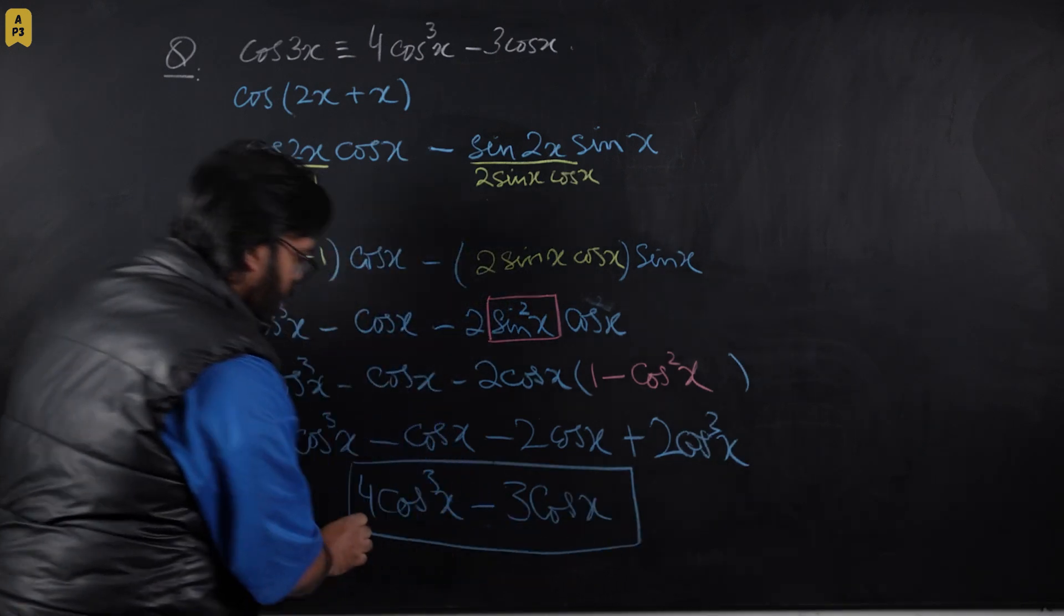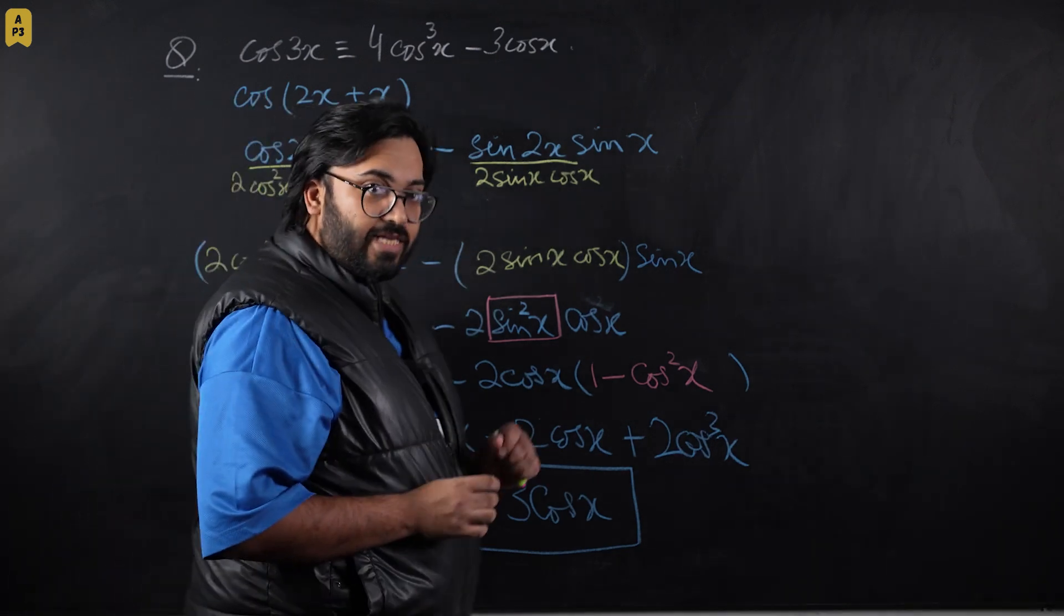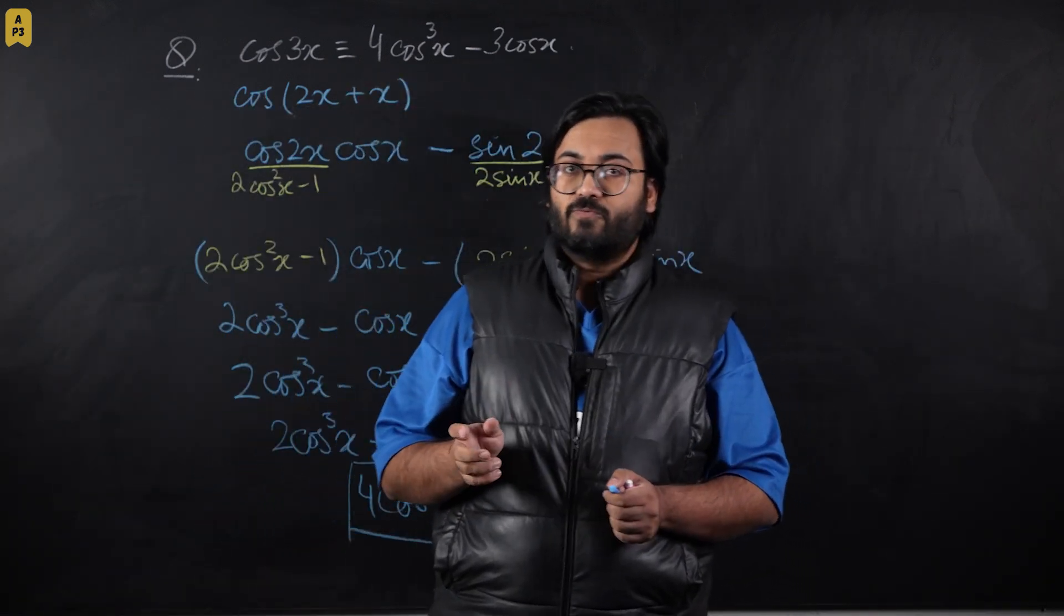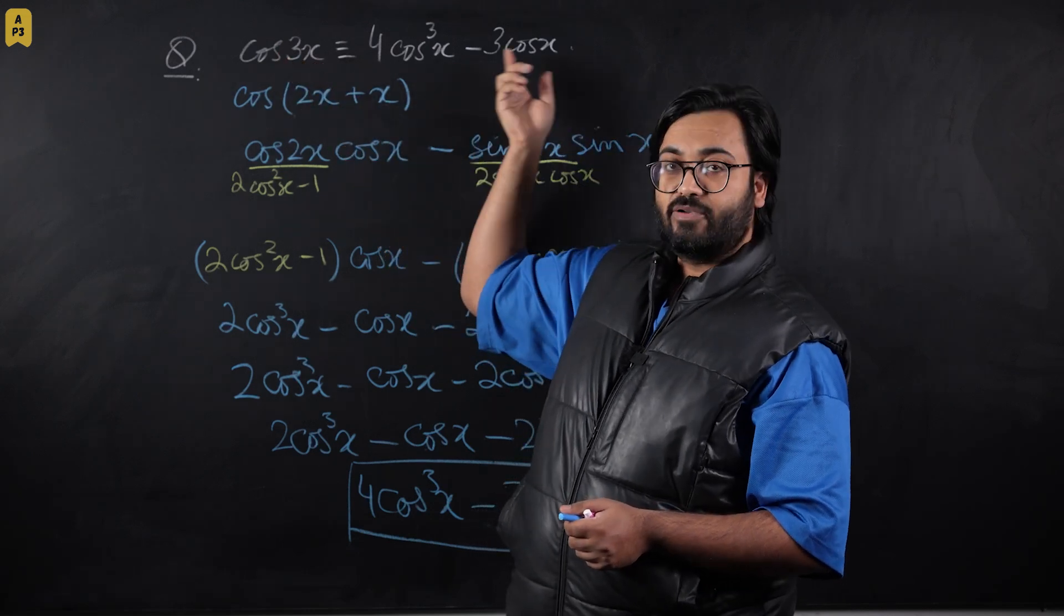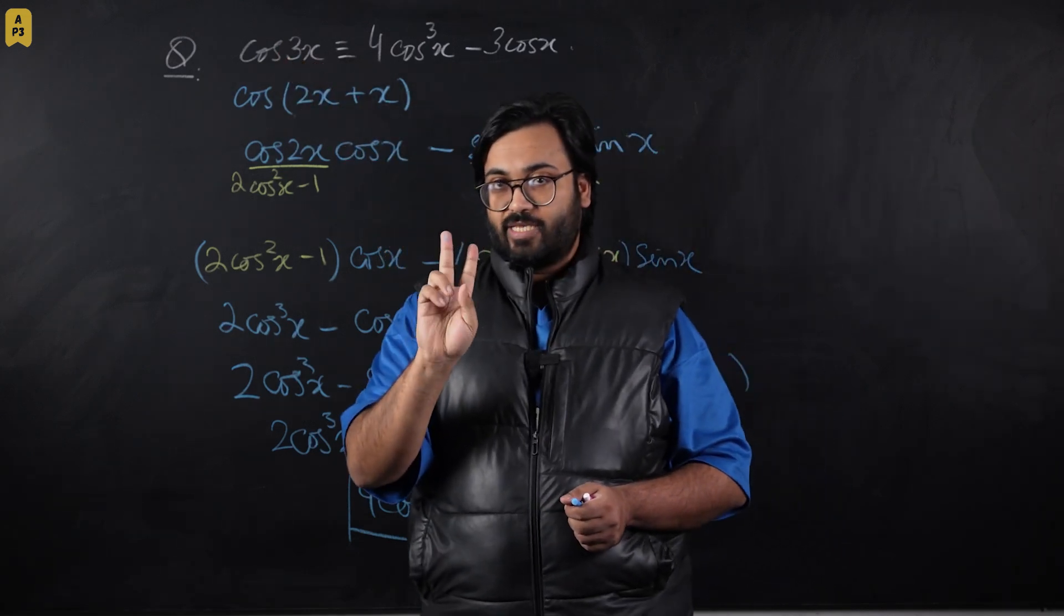In this question, we learned the tactic of how to break the angle from 3x and bring it to angle x. The main two pointers are: first, break 3x into 2x + x and apply the compound angle formula so you have separate terms for angle x and angle 2x.